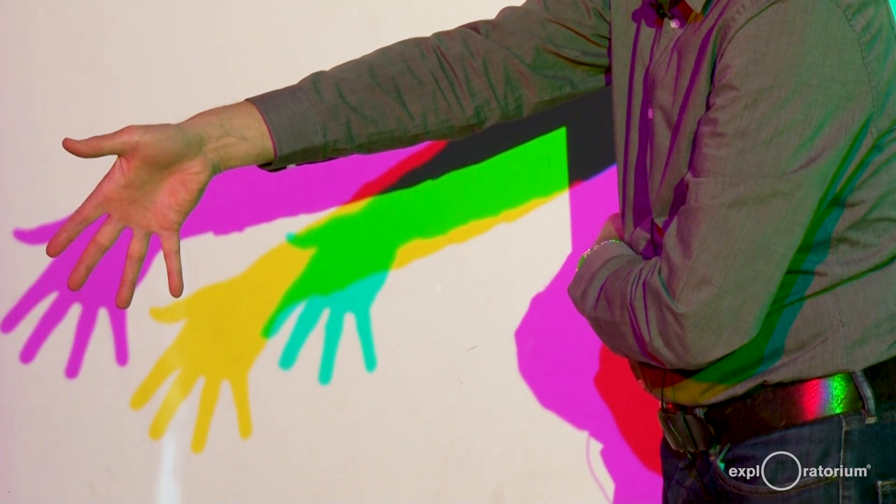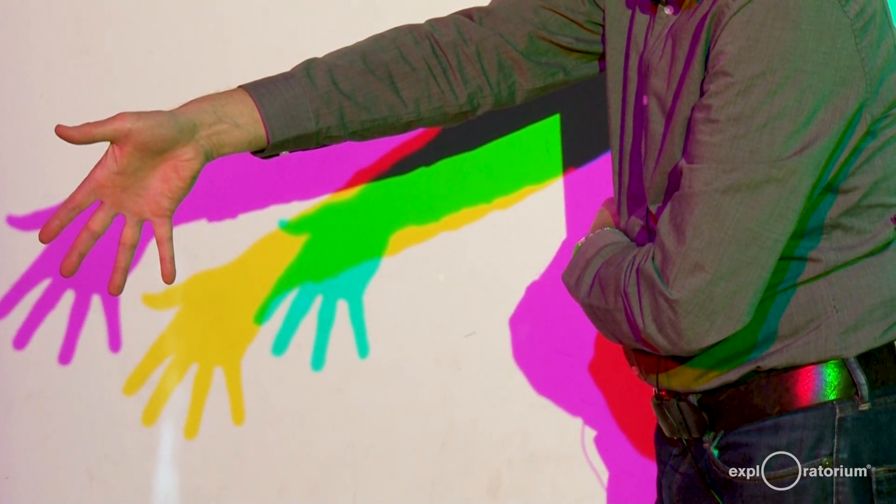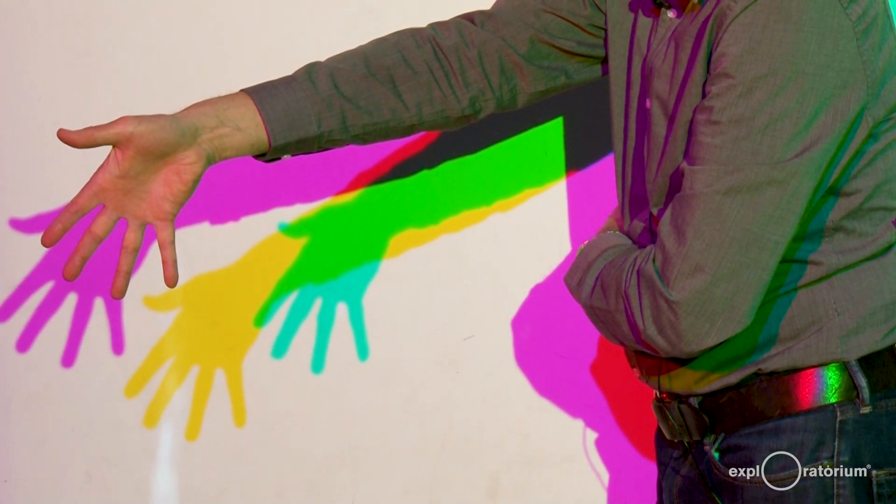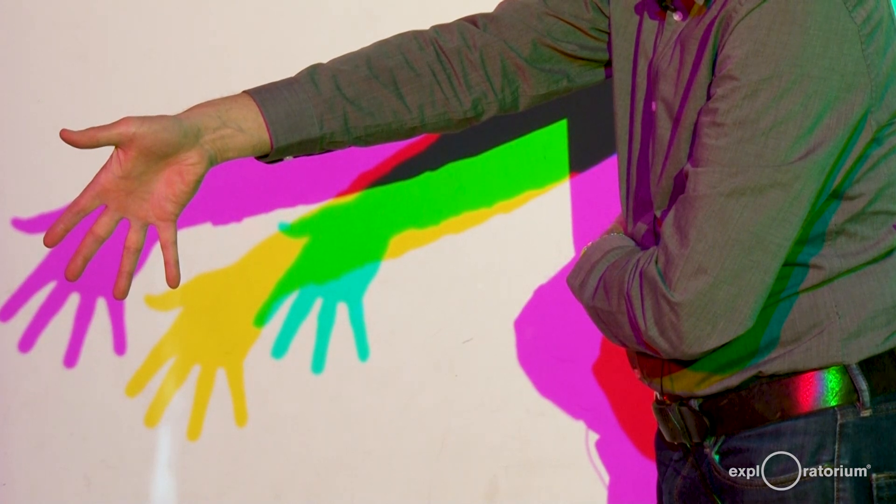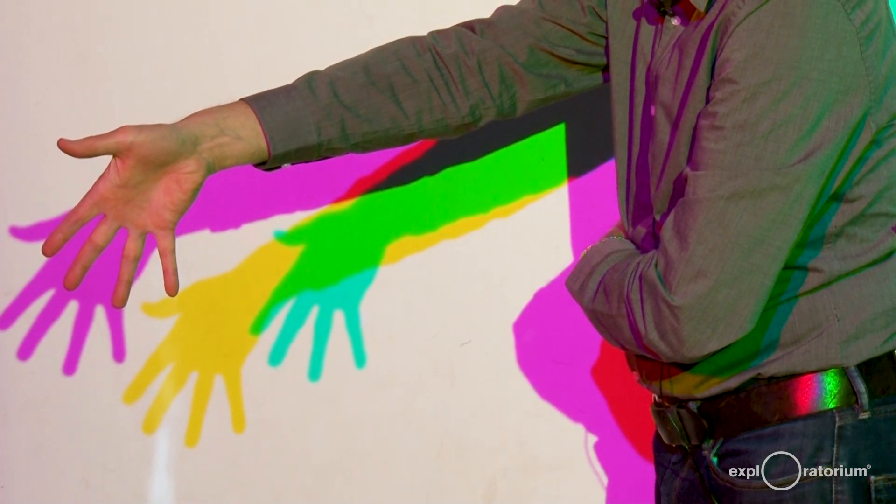The thing that's really tricky to me is this yellow shadow comes from blocking the blue light, and you can see the red and the green combine into our eye and brain appear to be yellow.